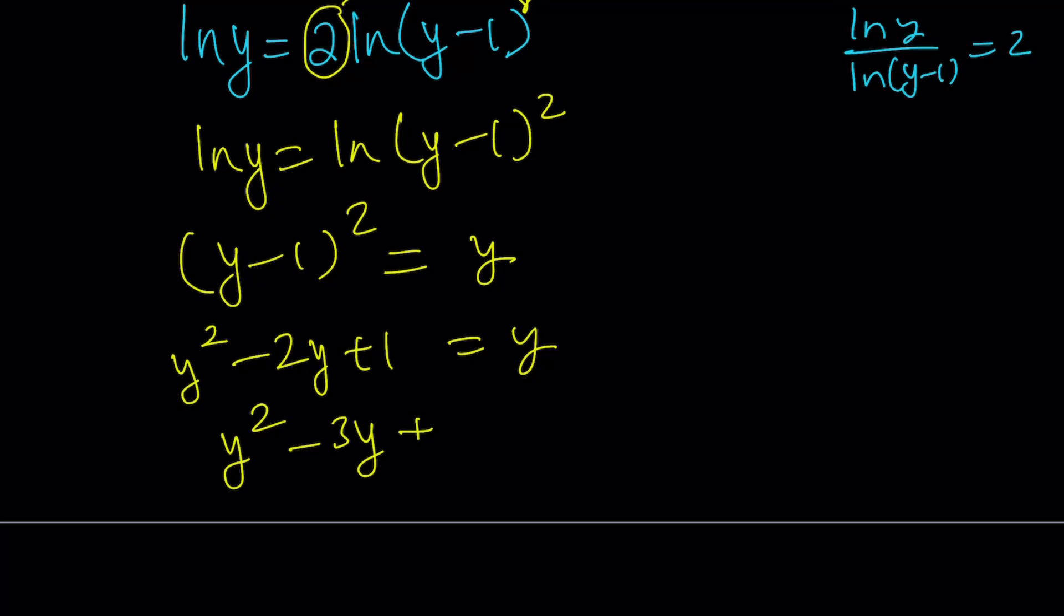you get y² - 3y + 1 = 0. This is also quadratic, and it has two solutions. Let's go ahead and write them. y₁ is going to be (3 + √5)/2. That is negative b plus the square root of b² - 4ac. b² is 9, 9 minus 4 is 5, so on and so forth. And y₂ is (3 - √5)/2. So the question is, are both of these solutions valid?